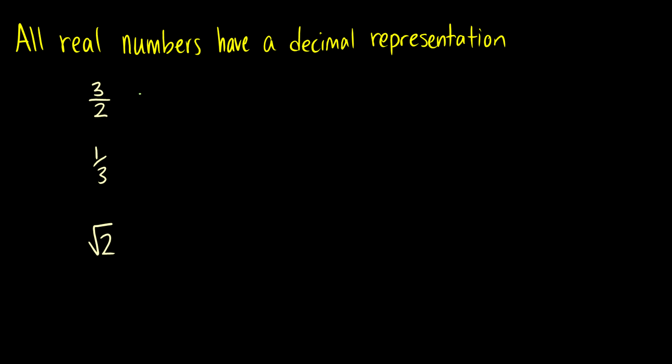So for instance, 3 over 2 can be written as 1.5. 1 third can be written as 0.333 repeating forever and ever. When I put a bar over a number, that just means that that one number repeats forever.